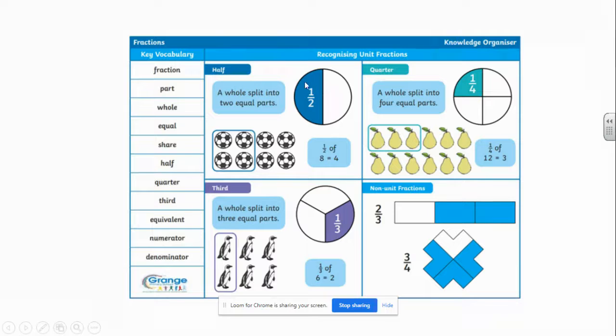So we're going to be finding a half by drawing a shape or having pictures. In this case we've got eight footballs which is split into halves. And then using these pictures, write down saying half of eight equals four. So these two tie in together.